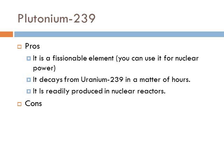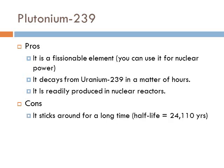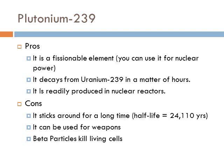The problems with plutonium-239 include that it sticks around for a very long time. It can also be used for weapons — if enemies get a hold of it, they could build nuclear weapons, or we might use it ourselves. Additionally, the beta particles emitted when plutonium-239 decays often kill living cells, which is a health hazard. Since it persists for such a long time, it continues decaying and remains dangerous for extended periods.